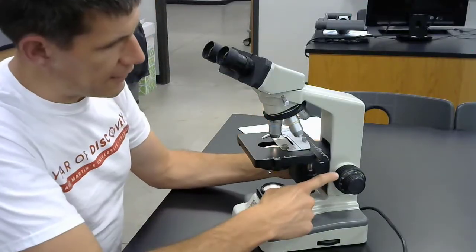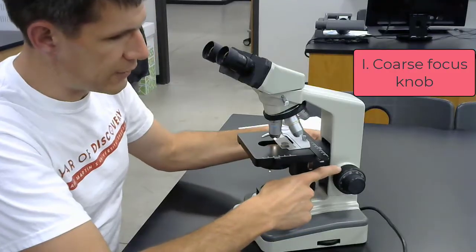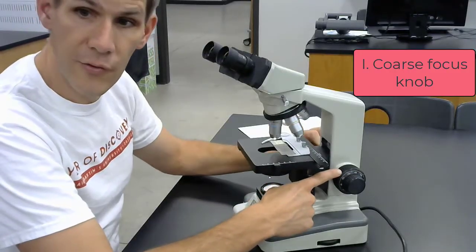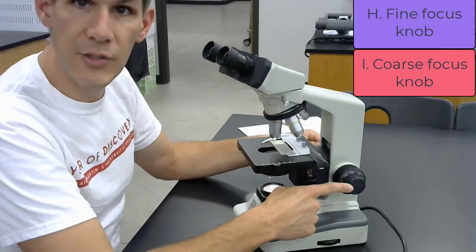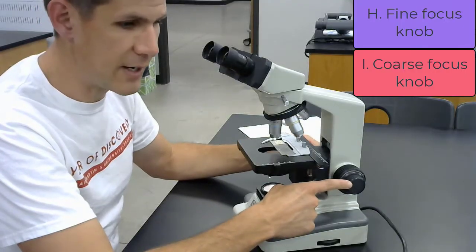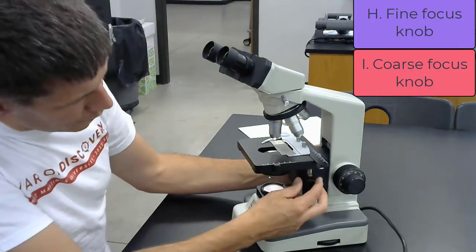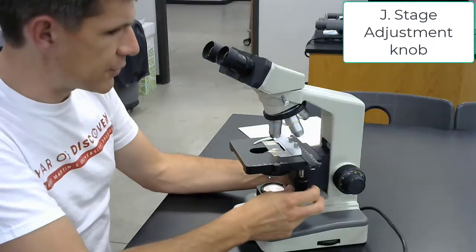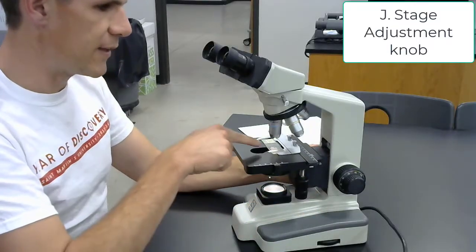Back here we have the coarse focus knob, which can move the stage up or down in a coarse manner, and the fine focus knob, which can move it up and down in a fine manner. Over here we have the stage adjustment knob, which can move the stage around and get the piece centered.